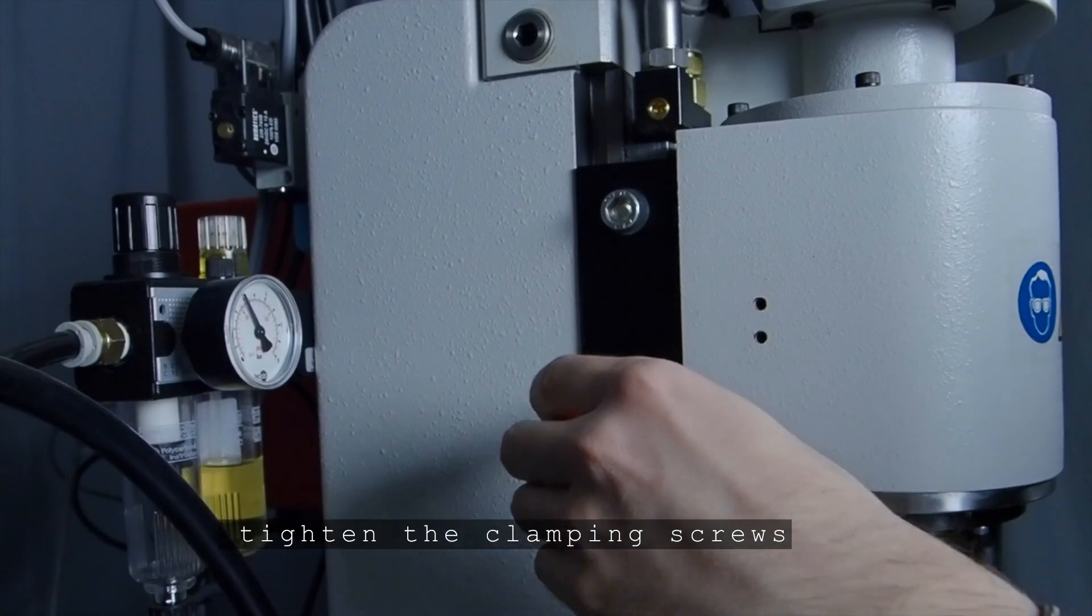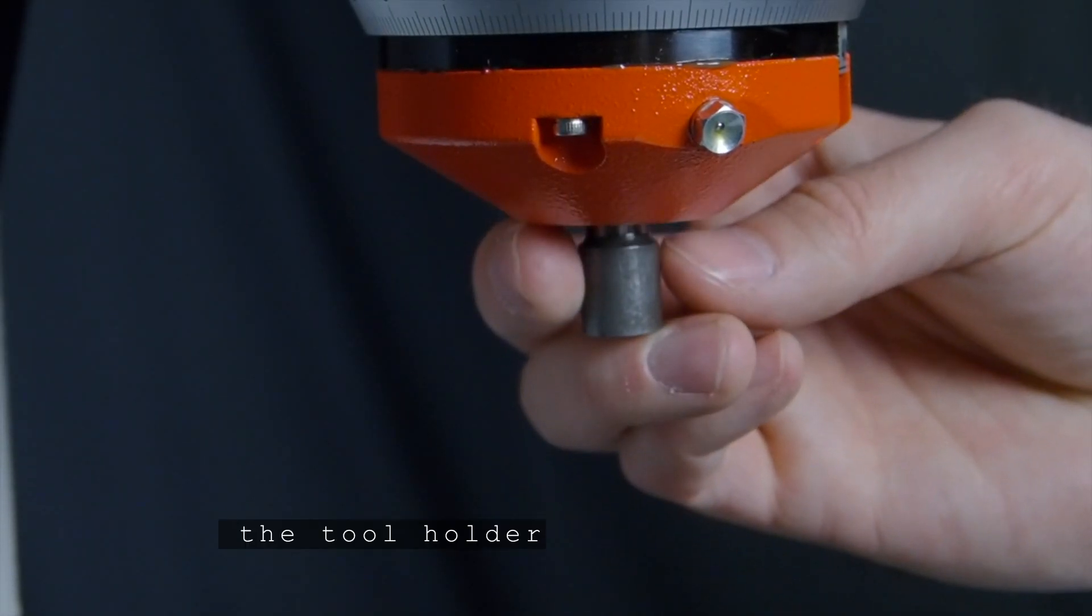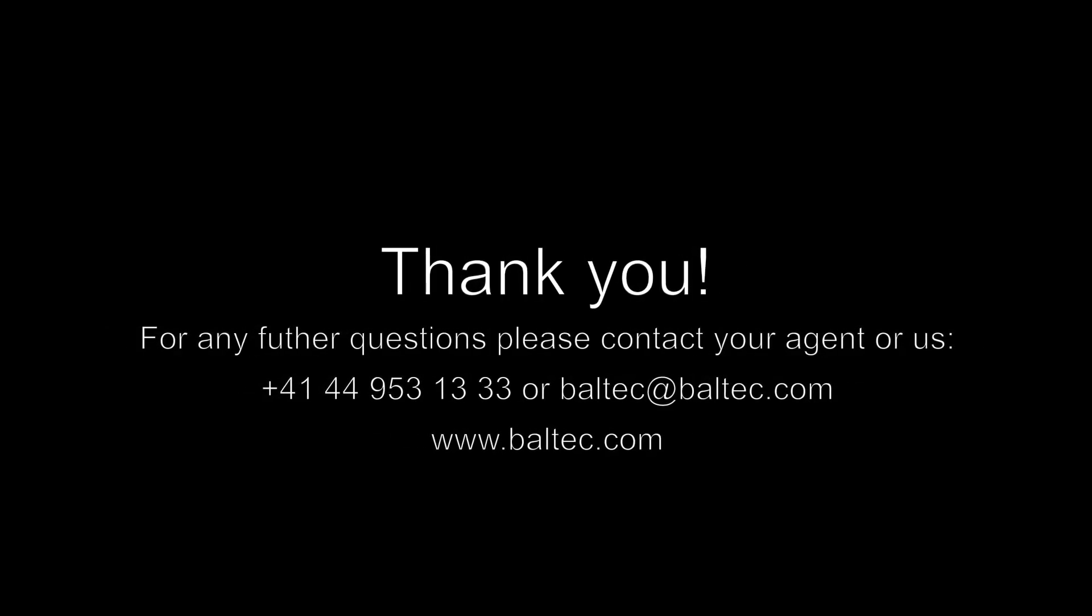Tighten the clamping screws of the riveting unit and put the riveting tool back in the tool holder. Thank you and goodbye.